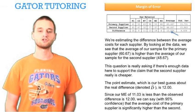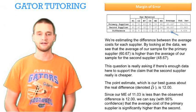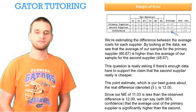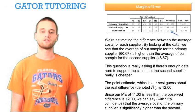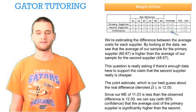The question gives us our margin of error of $11.03. And since that's less than the observed difference of 12, we can say, with 95% confidence, that the average cost of the primary supplier is significantly higher than the second.